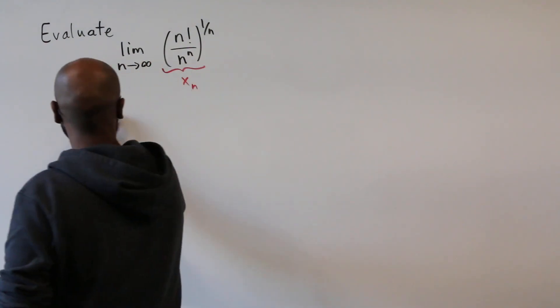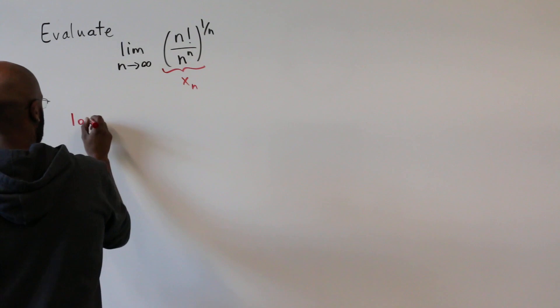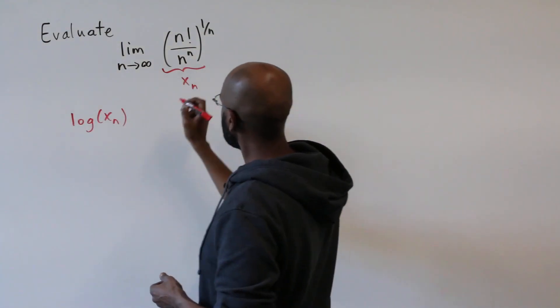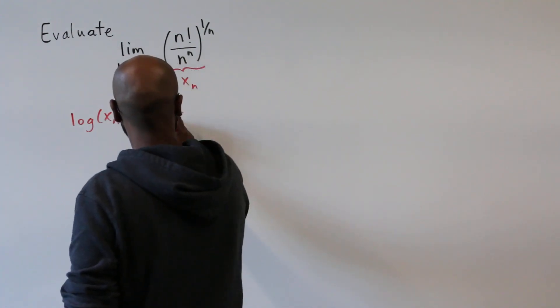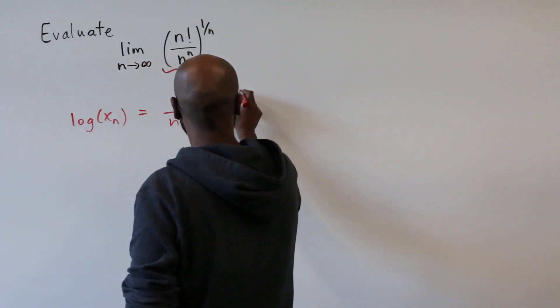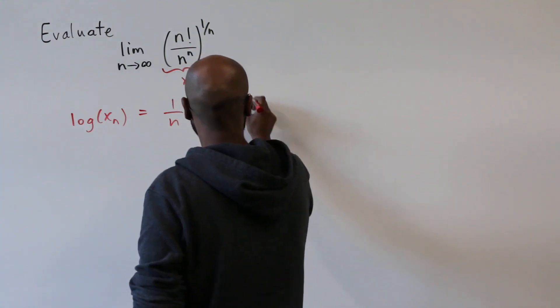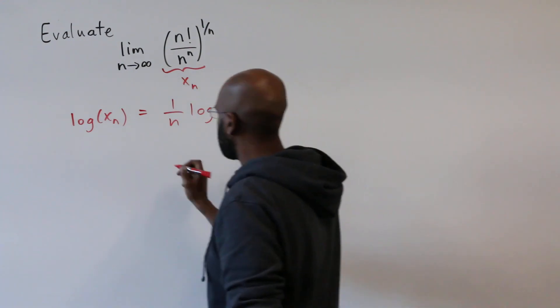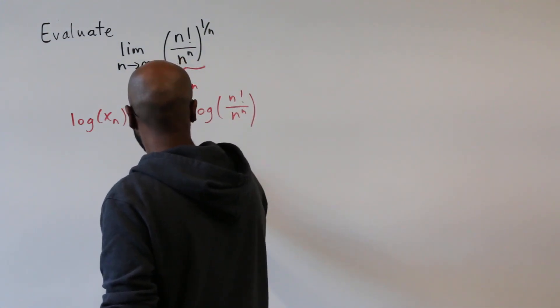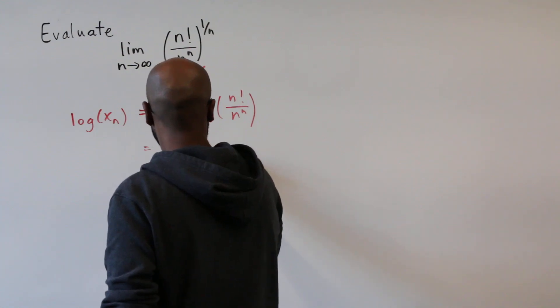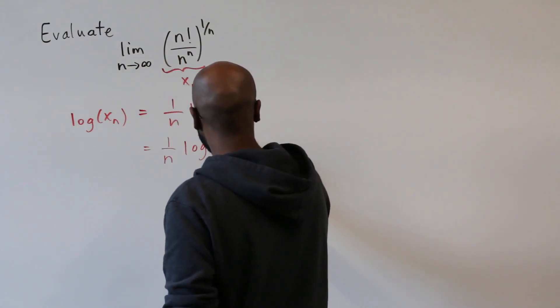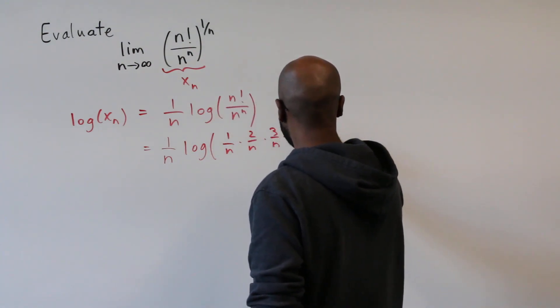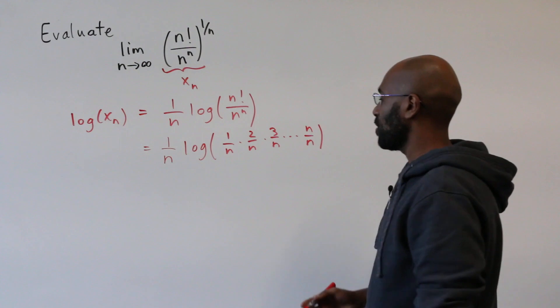I'm going to rewrite x sub n as the following by considering the logarithm of x sub n. So the logarithm of x sub n is 1 over n log of n factorial over n to the n. And now the thing is, we can write this inside piece as a product. The product looks something like 1 over n times 2 over n times 3 over n, all the way to times n over n.